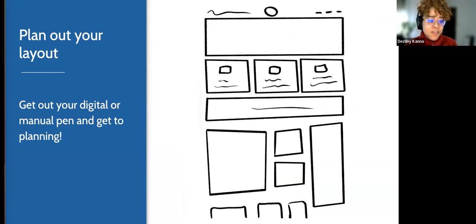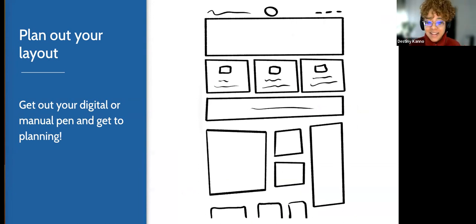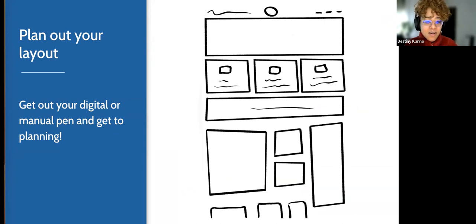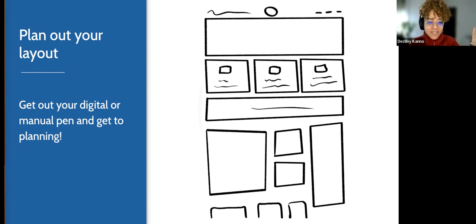Once you have a good idea of what you like, I recommend you get out your digital or manual pen and get to planning. I did a light sketch of what I'd like the homepage to look like: a tagline to the left, a circular logo in the middle, links to the right, a big header at the top, maybe three posts in the middle with featured images.